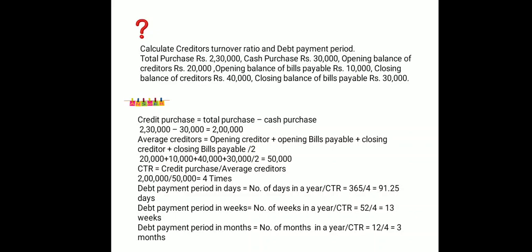Debt Payment Period in days = 365 divided by creditors turnover ratio = 365 divided by 4 = 91.25 days (approximately 91 days). In weeks = 52 divided by 4 = 13 weeks. In months = 12 divided by 4 = 3 months.